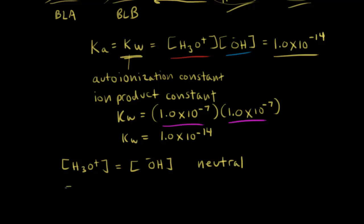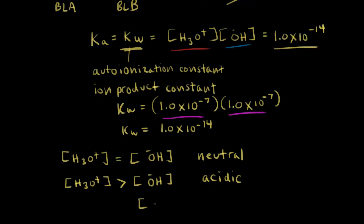If we had a solution where the concentration of hydronium ions was greater than the concentration of hydroxide anions, that's not a neutral solution — we call this an acidic solution. And if we think about the opposite, if we have a greater concentration of hydroxide anions than hydronium ions, then that's a basic solution.